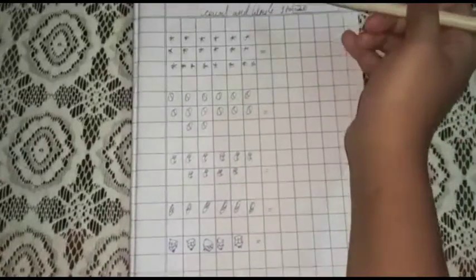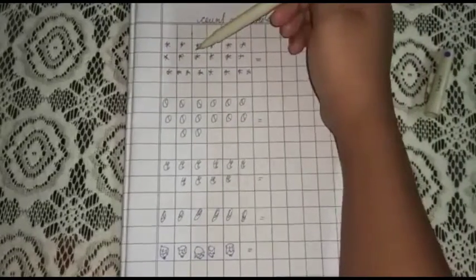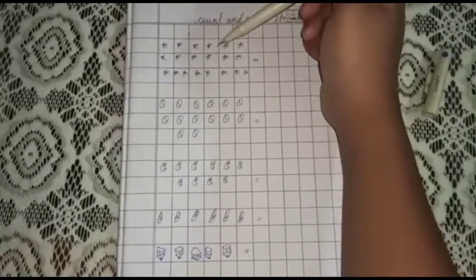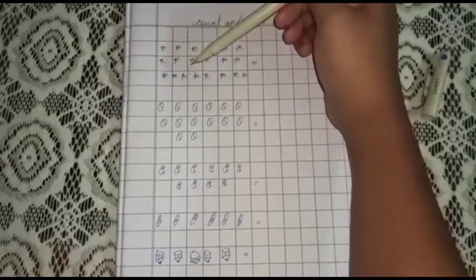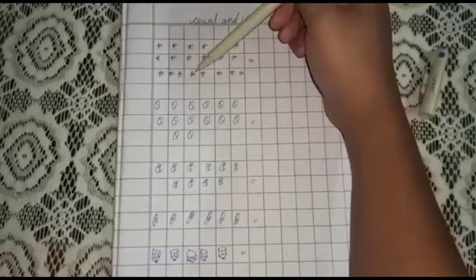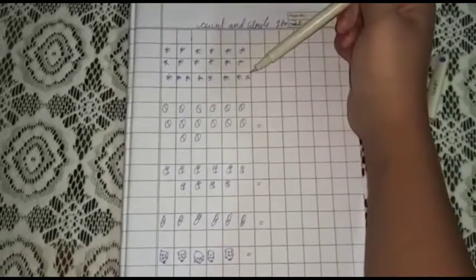So let's count: 1, 2, 3, 4, 5, 6, 7, 8, 9, 10, 11, 12, 13, 14, 15, 16, 17, 18, 19, 20.